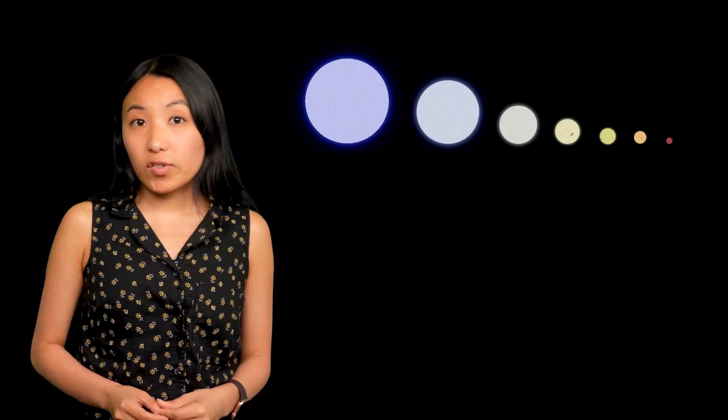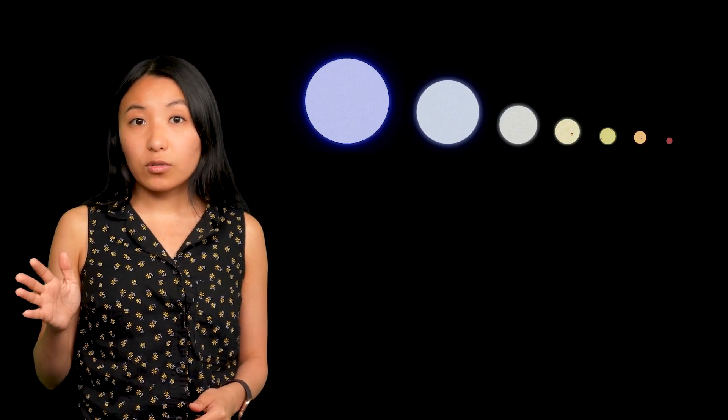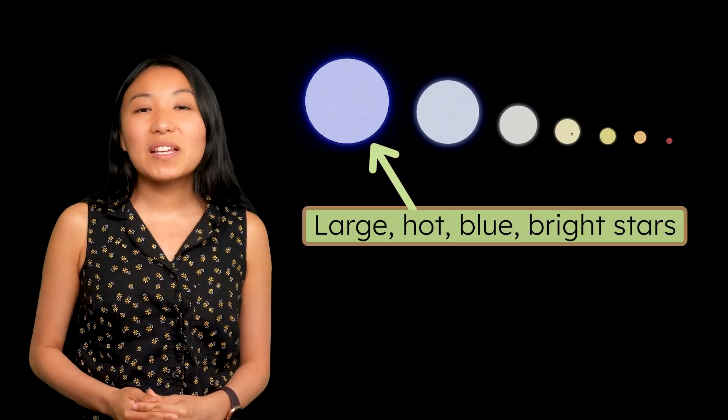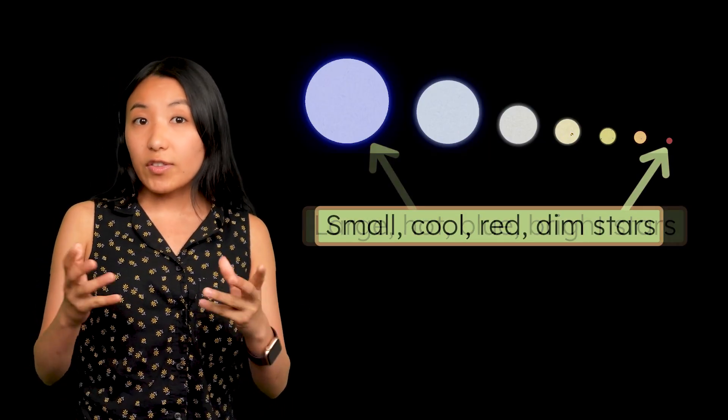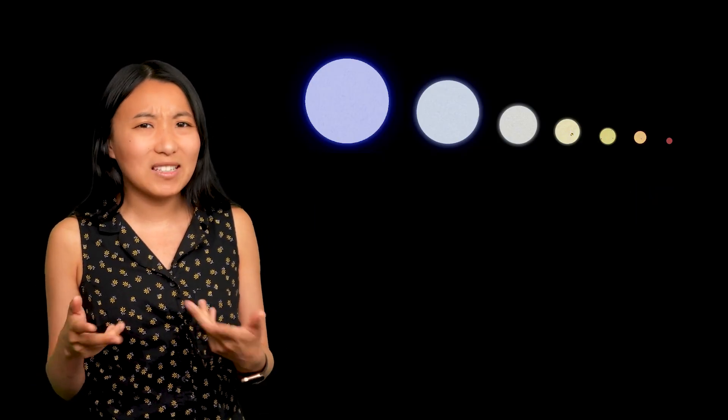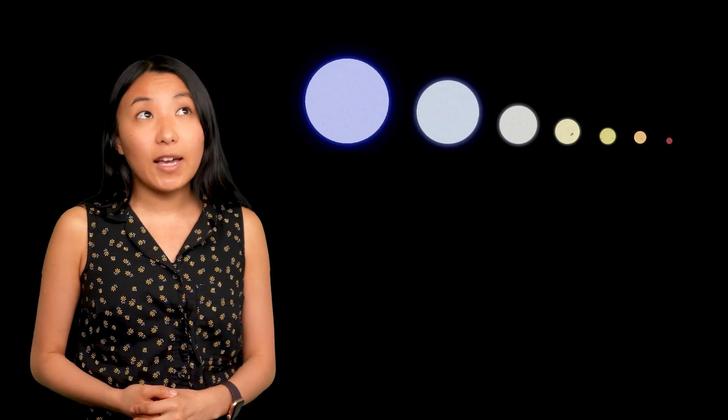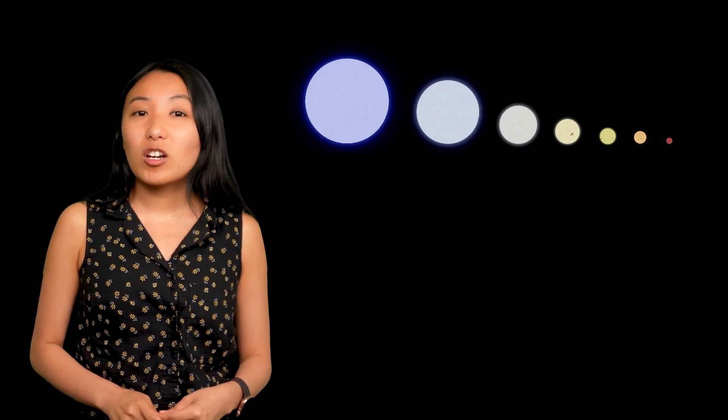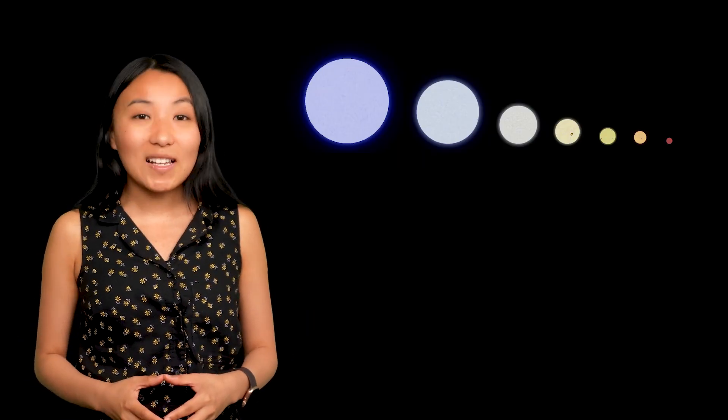Now let's bring in size, and here's where it all starts to click. Among the main sequence stars, there's a clear relationship between color, temperature, luminosity, and size. The largest main sequence stars are hot, blue, and bright, while the smallest are cool, red, and dim. Okay, cool might be an overstatement, as they're still thousands of degrees, but it's all relative. Let's take a look at how astronomers use this relationship to classify stars.